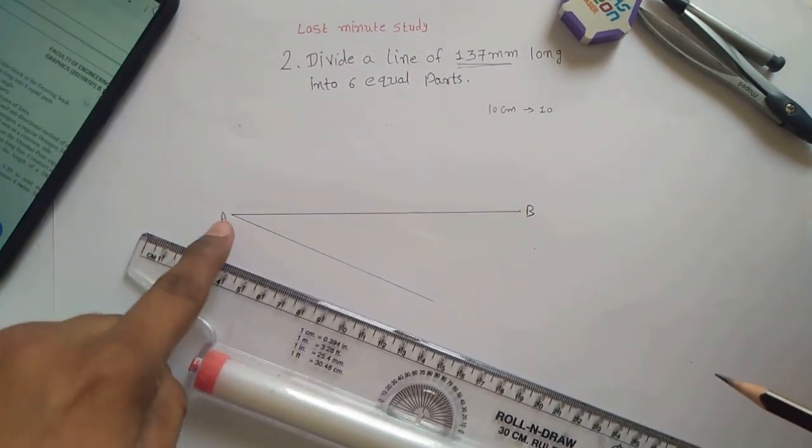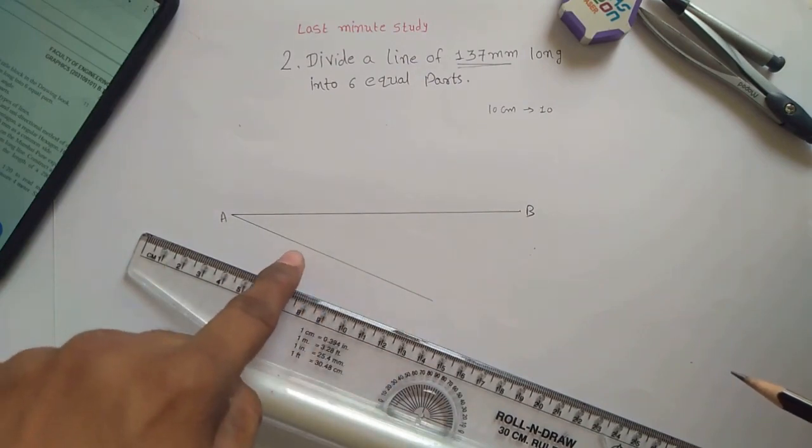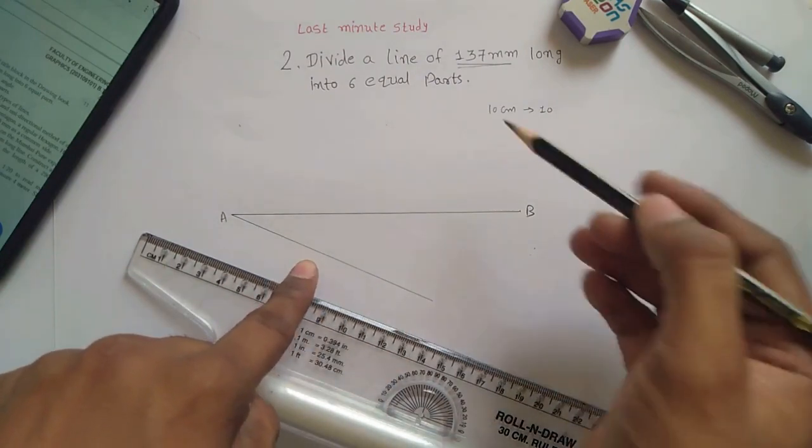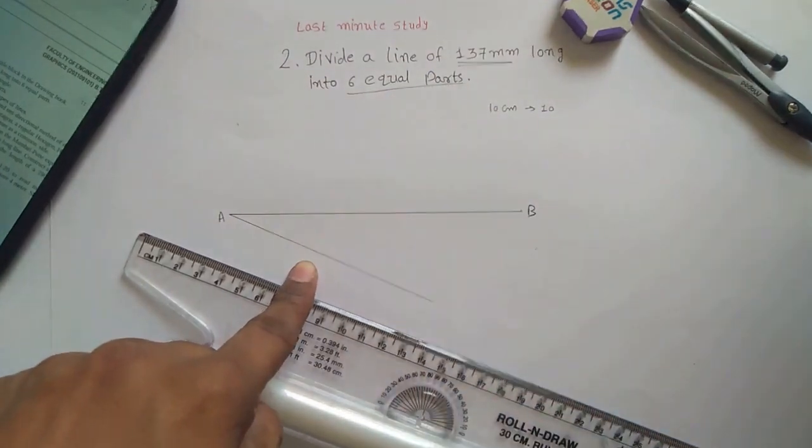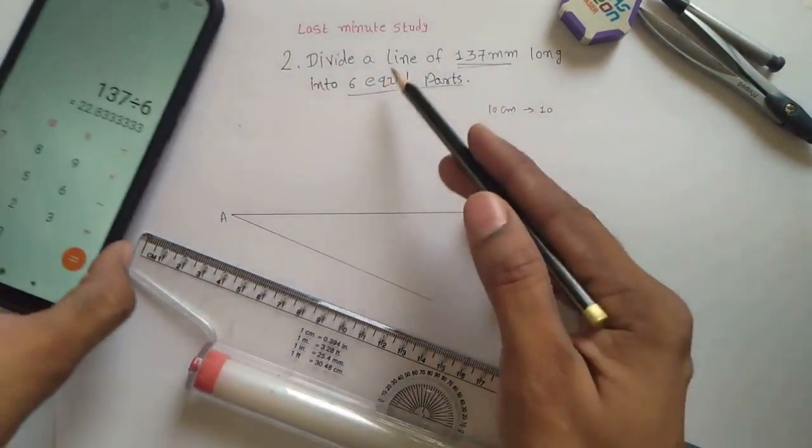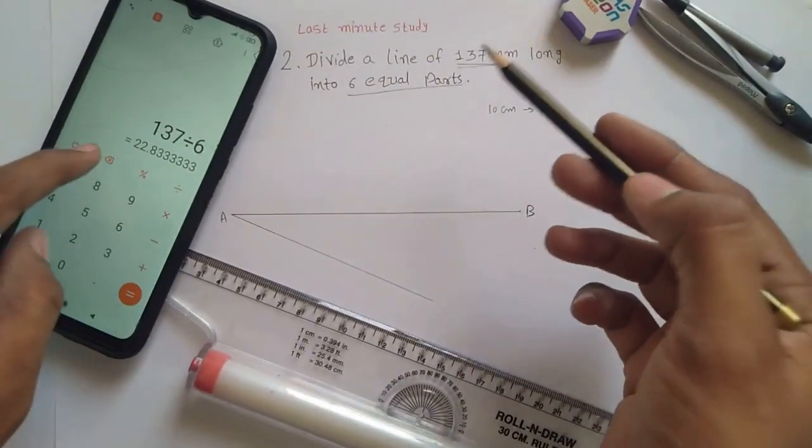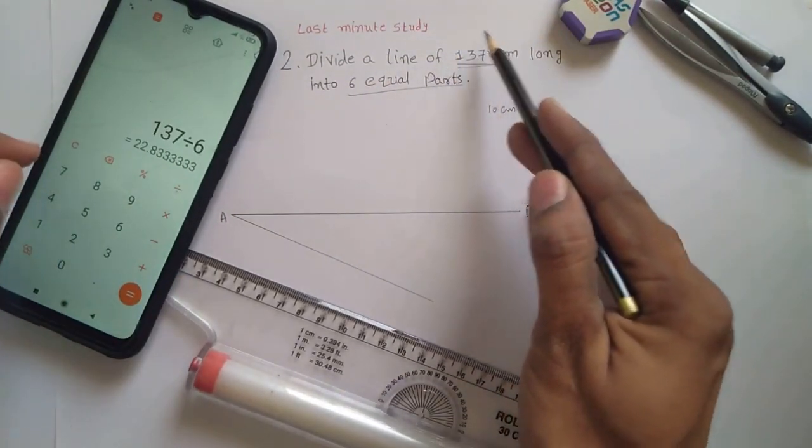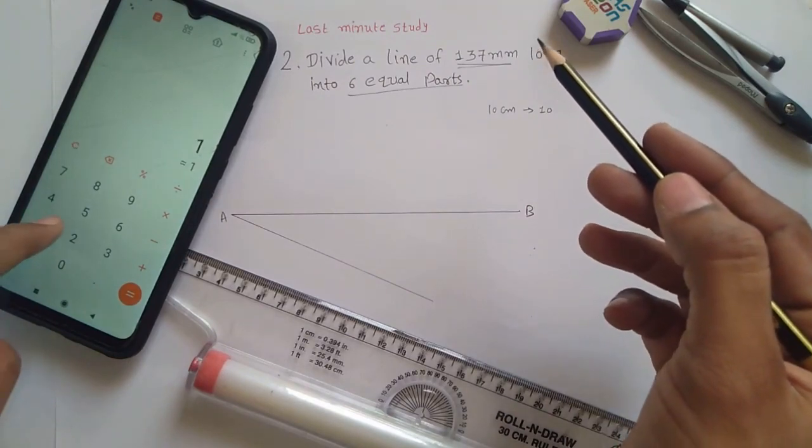Now you have to choose this length of the line. You have to choose this length according to the number of parts which you want to ask for. So it could be divided by the 6 equal parts and which could be nearer to 137. So if I say 120...